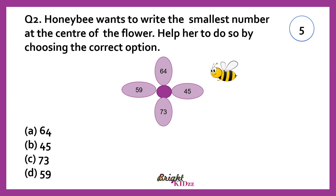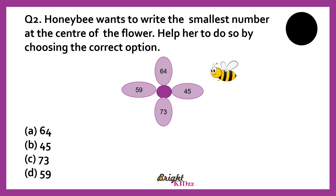Honeybee wants to write the smallest number at the center of the flower. Help her to do so by choosing the correct option. Answer: 45. 45 is the smallest number among all 4.